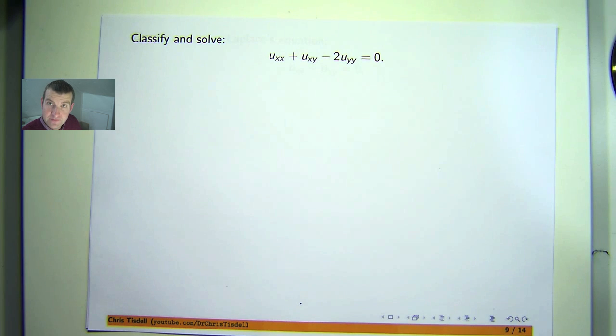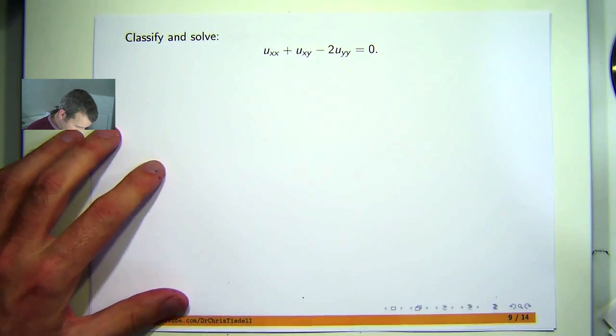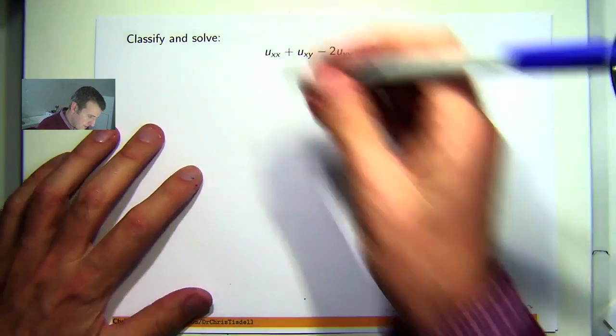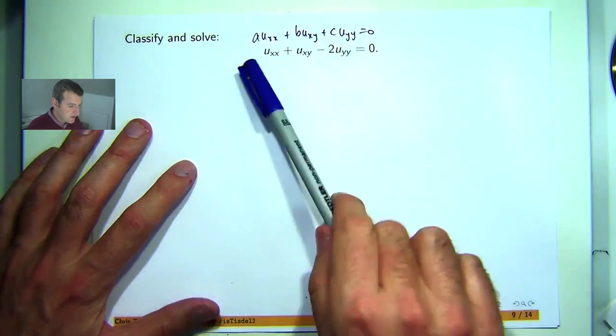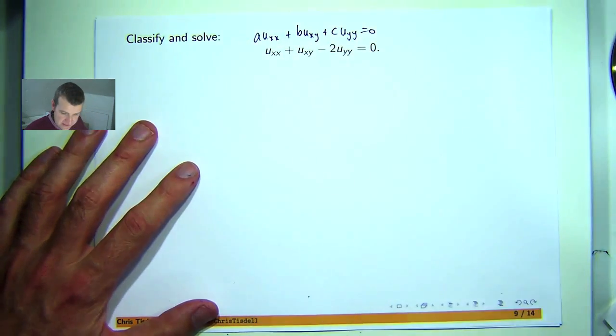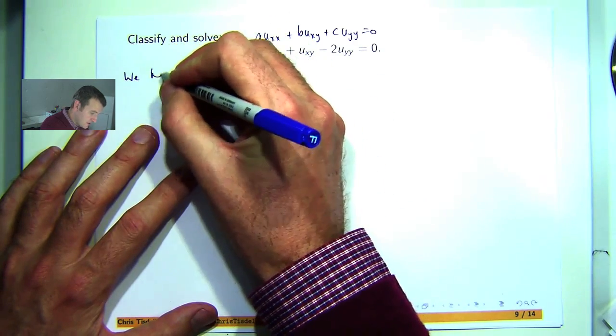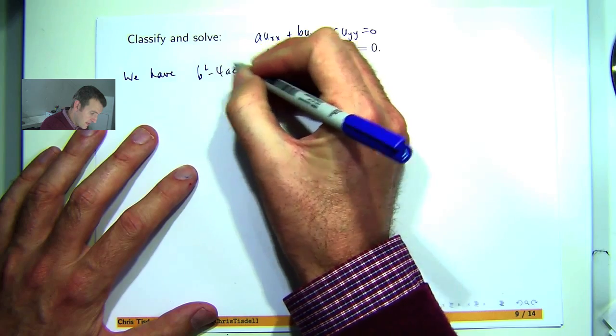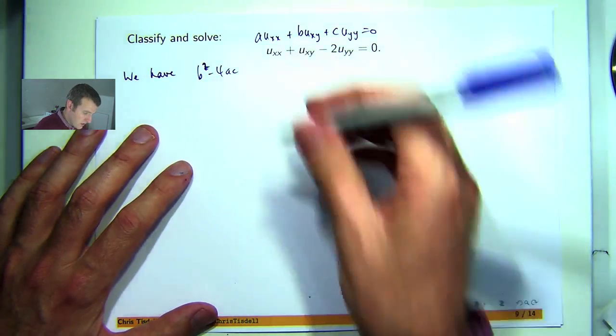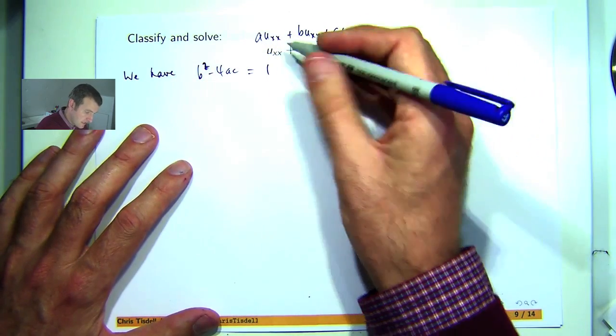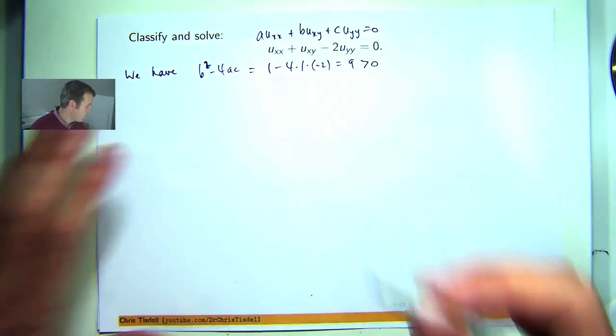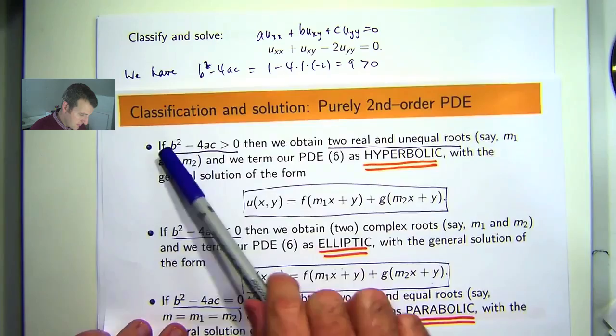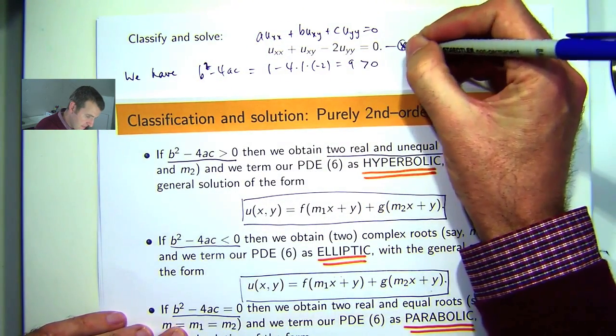Let's do some examples. Classify and solve the following PDE with purely second order derivatives and constant coefficients. So here, A is 1, B would be positive 1, and C would be negative 2. So let's classify it first. For this, we want to look at the discriminant, B squared minus 4AC. So it's going to be 1 minus 4 times negative 2. So it's going to be 9, and that's positive. So it's the first case. Our PDE, let's call it star, is going to be hyperbolic.